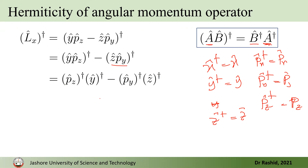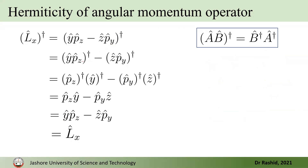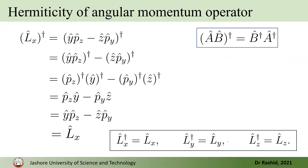Since the z component of momentum commutes with the y component of position, we can swap their order back. Doing so, the expression inside the parentheses is exactly Lx. Therefore Lx is Hermitian. The same argument applies to all three components, so Lx, Ly, and Lz are all Hermitian operators.